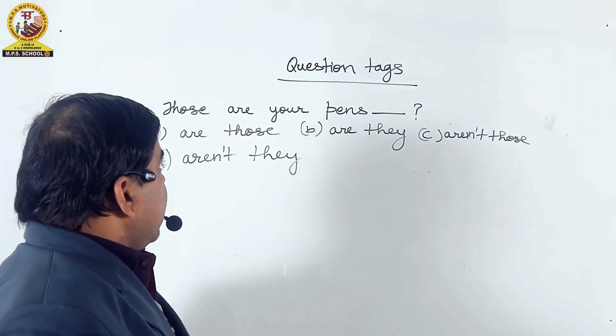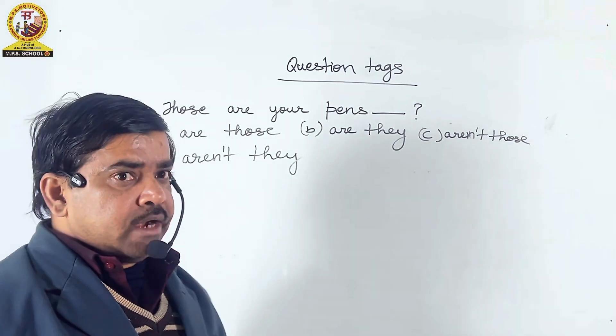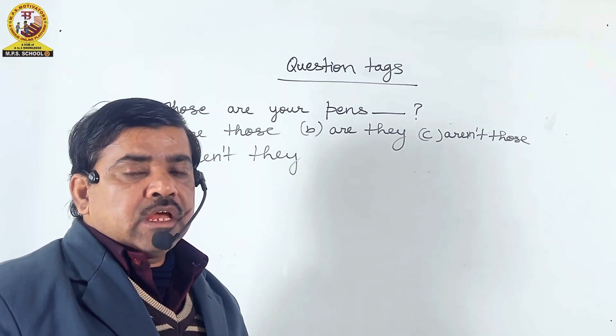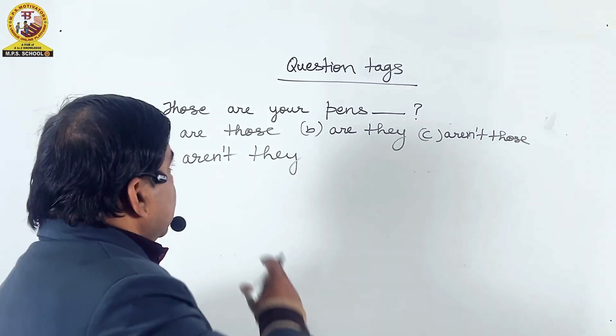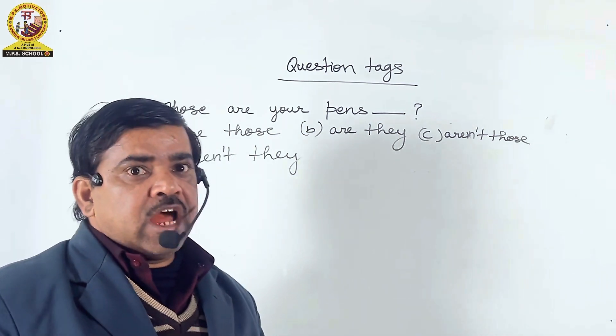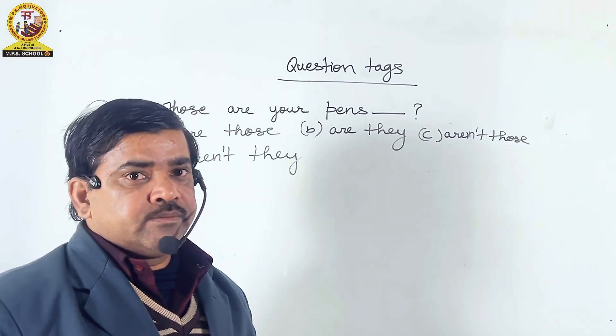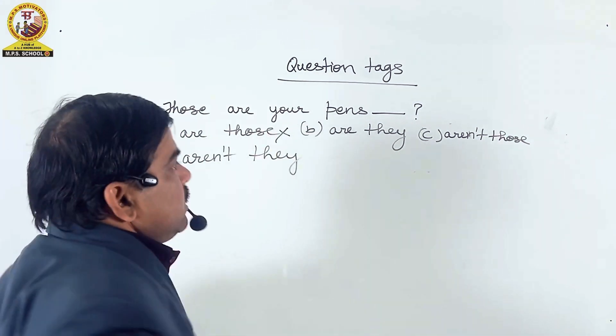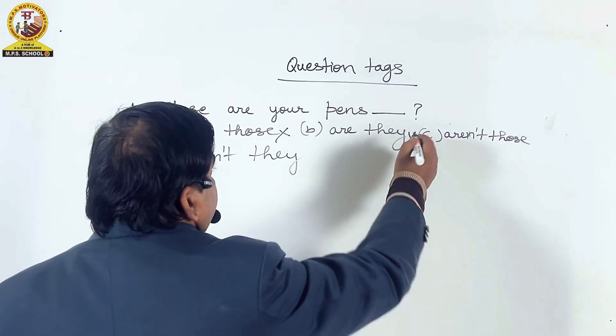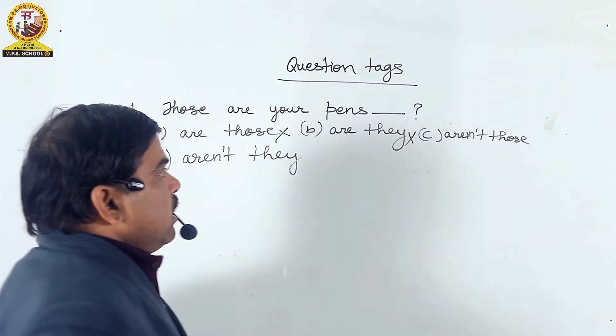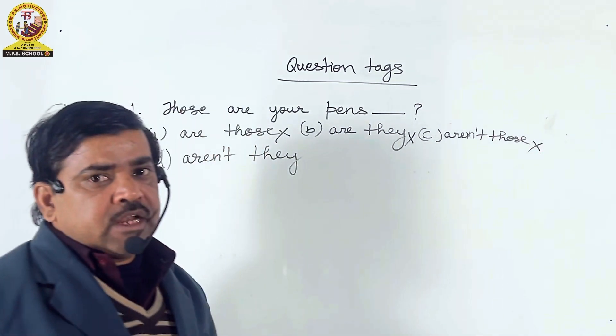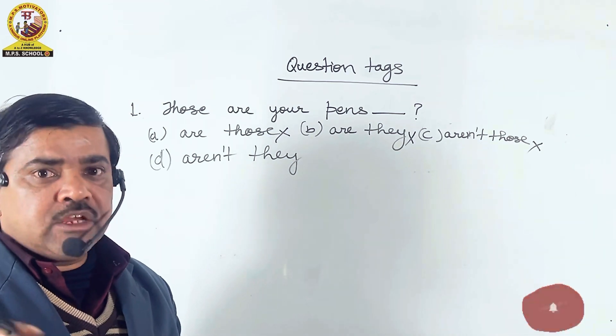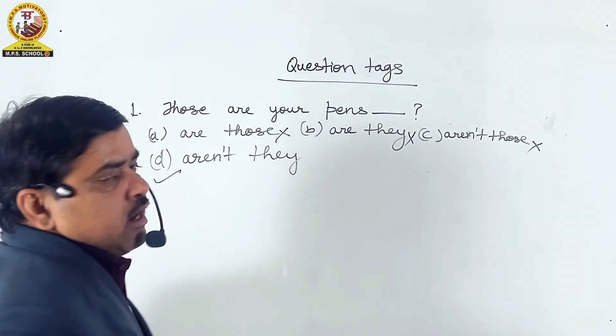Those are your pens, dash question mark. You must have studied question tags and you must know that if the statement is affirmative, we use negative question tag. So here, are those cannot be the right option. Are they can also not be the right option. Aren't those can also not be the right option, because those is not used as the subject of any question tag. So the right option is aren't they.